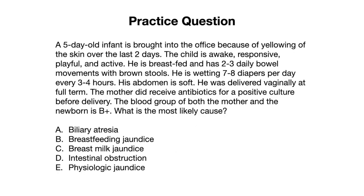Let's move on to a practice question. A five-day-old infant is brought into the office because of yellowing of the skin over the last two days. The child is awake, responsive, playful, and active. He is breastfed and has two to three daily bowel movements with brown stools, and is wetting seven to eight diapers per day every three to four hours. His abdomen is soft. He was delivered vaginally at full term. The mother received antibiotics for a positive culture before delivery. The blood group of the mother and the newborn is B positive. What is the most likely cause?